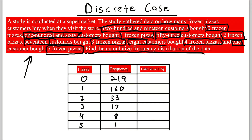Now we have left is the cumulative frequency column. What the cumulative frequency tells us in each row is the number of people who bought that corresponding number of pizzas or fewer. In the first row we need to put the number of people who purchased zero pizzas or fewer. You can't purchase fewer than zero pizzas, and 219 people purchased exactly zero pizzas, so 219 people purchased zero pizzas or fewer.